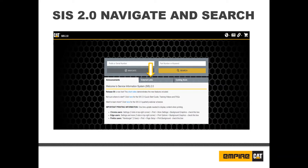The next tab is external links. Here you will have access to all CAT affiliate links such as TMI Web, CAT branded telehandlers, and Sims Eye. Access to information will depend on subscription. The next tab is coming soon. Here we'll show you what features are currently in development, and it also shows the current release to Sys 2.0 and what is in Sys 2.0 based on previous releases.